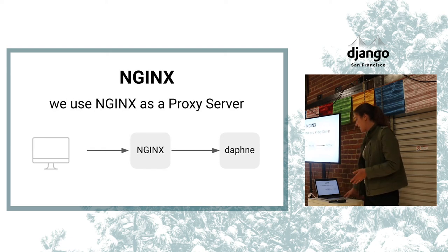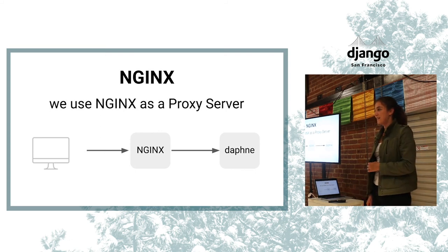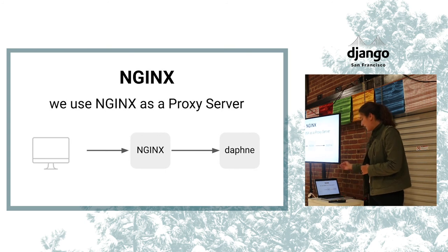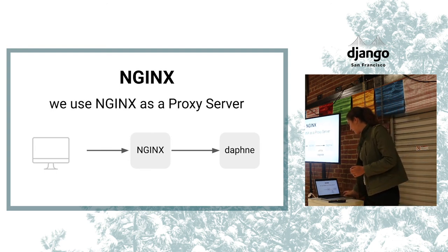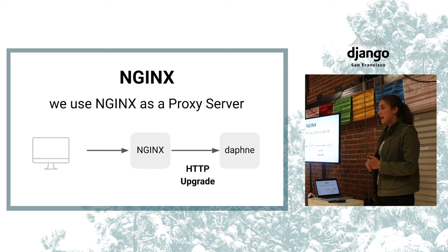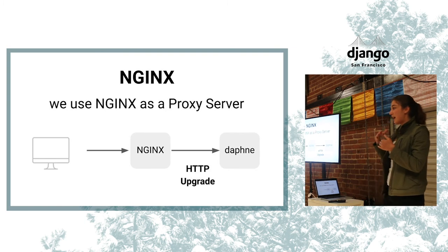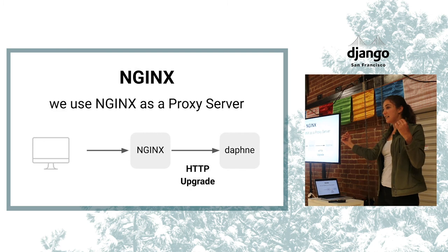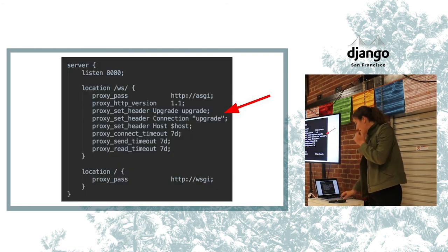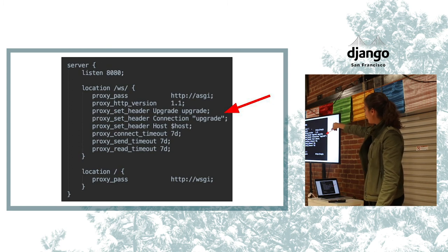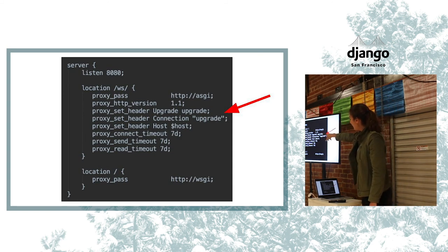A common setup is to use Nginx as a proxy server — Nginx routes WebSocket traffic to Daphne and HTTP traffic to Gunicorn. The WebSocket protocol works over HTTP first: you send an HTTP upgrade request, get back a 101 switching protocols response, and then you have the persistent connection. Nginx is where we handle this upgrade request. In the Nginx config, you add the upgrade header and connection upgrade lines for WebSocket traffic routing.